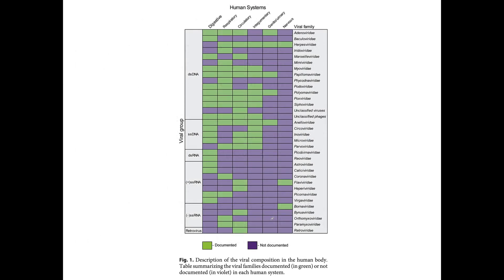In this paper, they give us a figure showing green for documented presence of viruses and purple for not documented, across various human systems: digestive, respiratory, circulatory, integumentary (skin), genitourinary, and nervous system. In the nervous system, they've identified herpes viruses, adenoviruses, flaviviruses, and bornaviruses. In the respiratory system, there is a naturally occurring coronavirus — not the one circulating now — but you can see our respiratory system is naturally inhabited by a type of coronavirus. Viruses are prolific across all body systems.